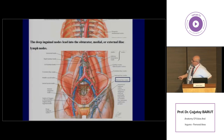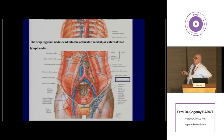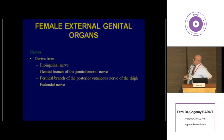Here again we can see the superficial inguinal lymph nodes, and on the opposite side we can see the femoral artery with the deep inguinal lymph nodes around it. One of these lymph nodes is placed inside the femoral canal — placed at the entrance of the femoral canal — and is known as Cloquet's lymph node. Here we can also see the placement of the external iliac nodes around the external iliac vessels.